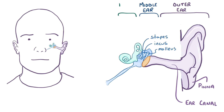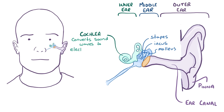And finally there's the inner ear, which has very special tissue structures called the cochlea, which converts sound waves into electrical impulses for the brain, and the semi-circular canals which help with balance.